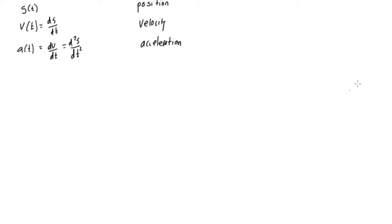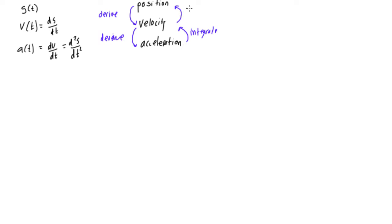Here's a quick shortcut that's handy to know: if we have position, we can get to velocity by taking the derivative. If we derive velocity, we get acceleration. Conversely, if we integrate acceleration going the other way, we get velocity. And if we integrate velocity, we get position. This makes sense — deriving is the opposite of taking the antiderivative, which is just the integral.